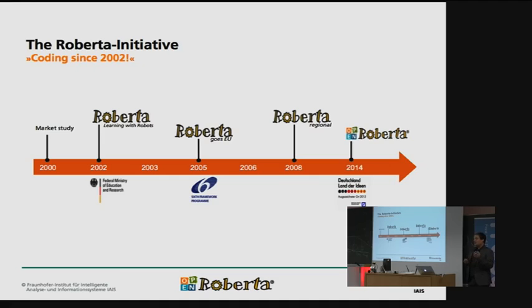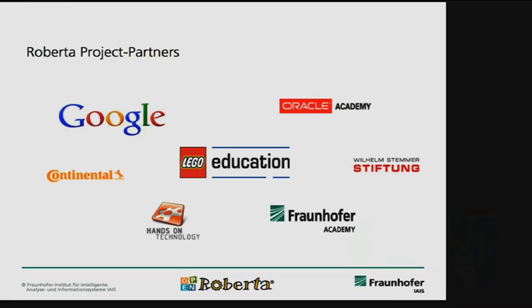Our core partners include Google, Oracle, Wilhelm Stemmerer Stiftung, and Fraunhofer in general — otherwise it wouldn't work. Continental and Lego provide us with robots. We're targeting different hardware as well because we're aware that people are doing things with additional hardware, and we want to incorporate these different hardware pieces in our systems and make programming easy for various hardware devices.